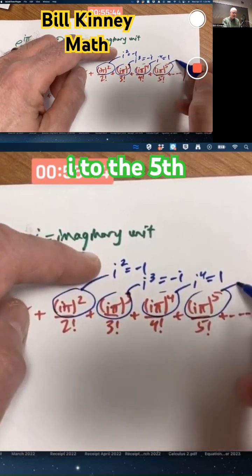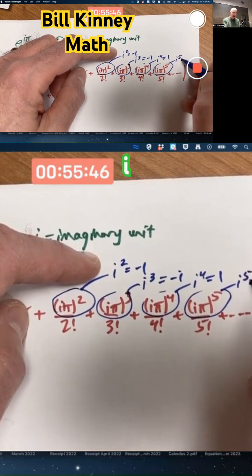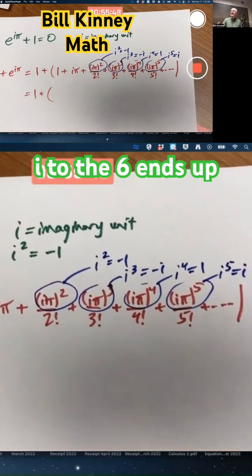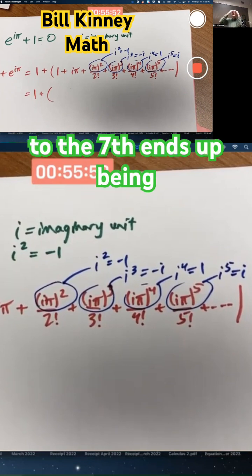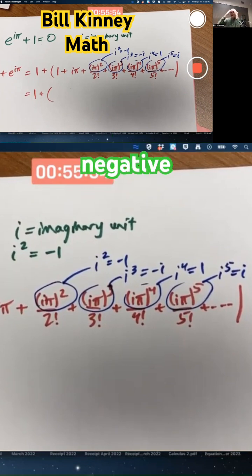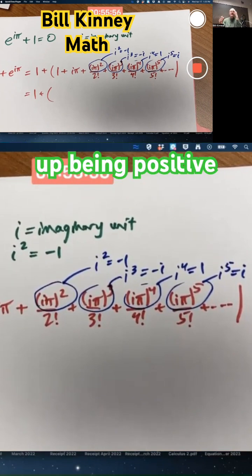i to the fifth ends up being 1 times i, i itself. i to the sixth ends up being i squared, negative 1. i to the seventh ends up being negative i. i to the eighth power ends up being positive 1 again.